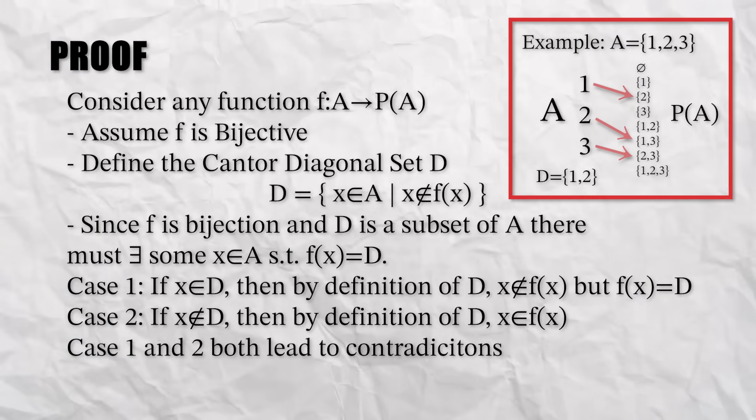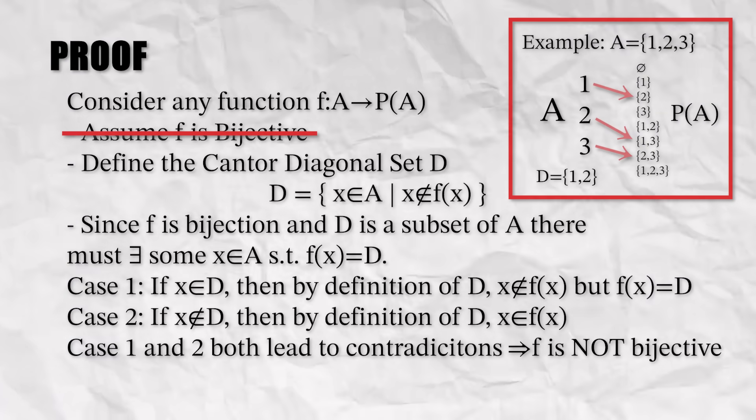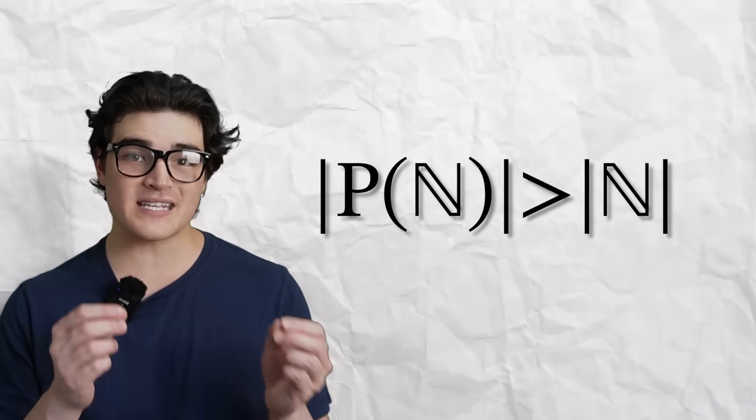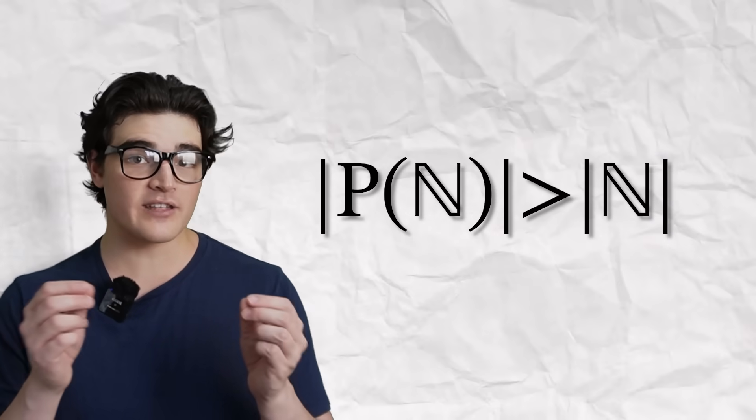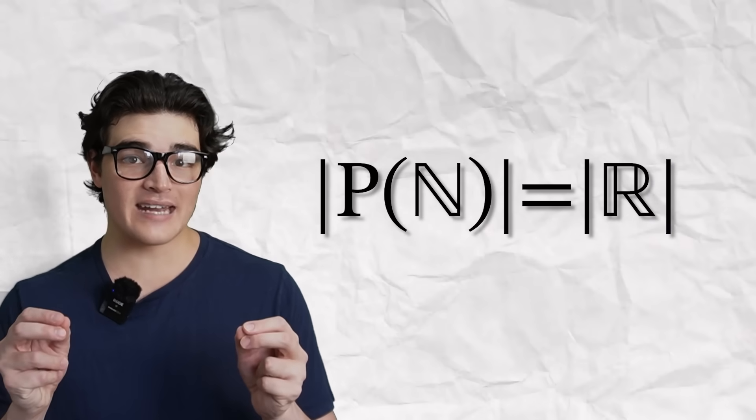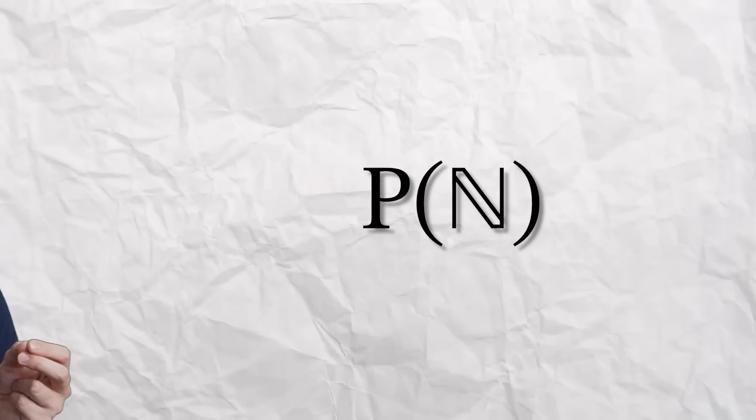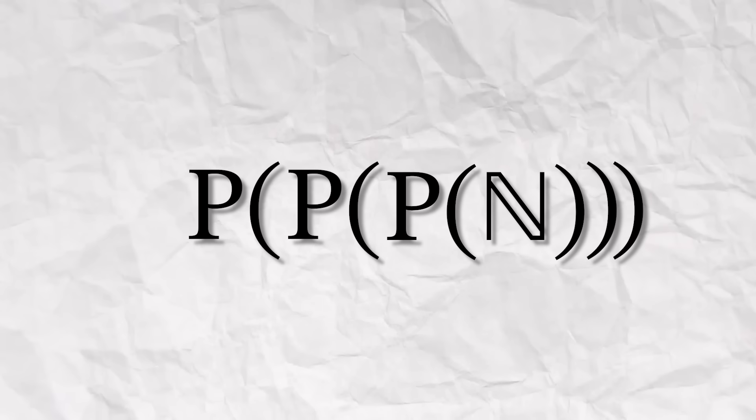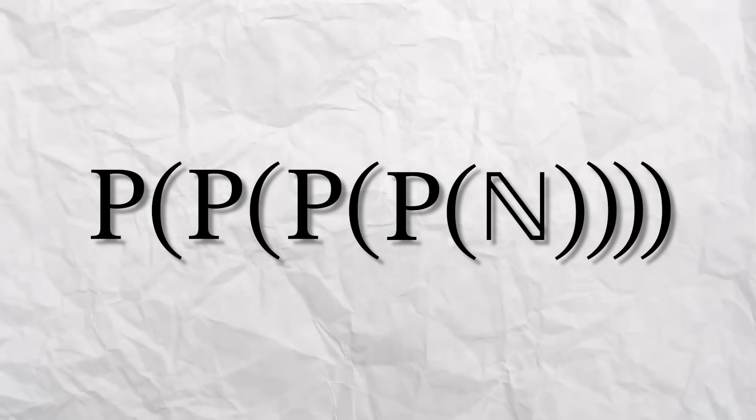So in either case, we hit a contradiction, which means our assumption must be wrong and f cannot be bijective. What this means is that the cardinality of the power set of the natural numbers is strictly larger than the cardinality of the natural numbers. In fact, this cardinality is exactly the same as the cardinality of the real numbers. But it doesn't end there. We can also take the power set of the power set, and the power set of that power set, and the power set of that power set. And every time we take the power set, our cardinality will be bigger than before. So from this result, we get that there exist infinitely many infinities.